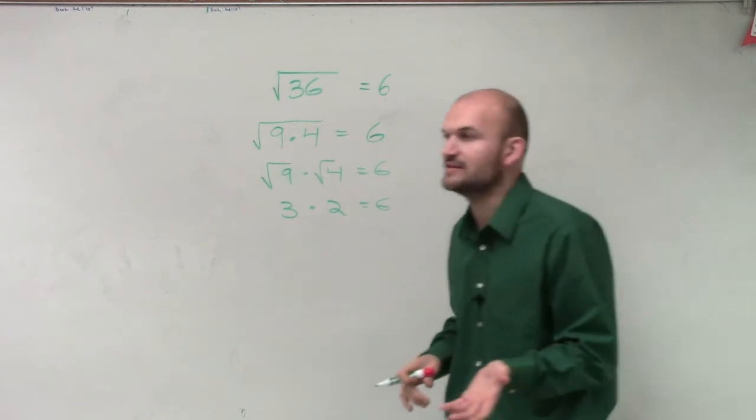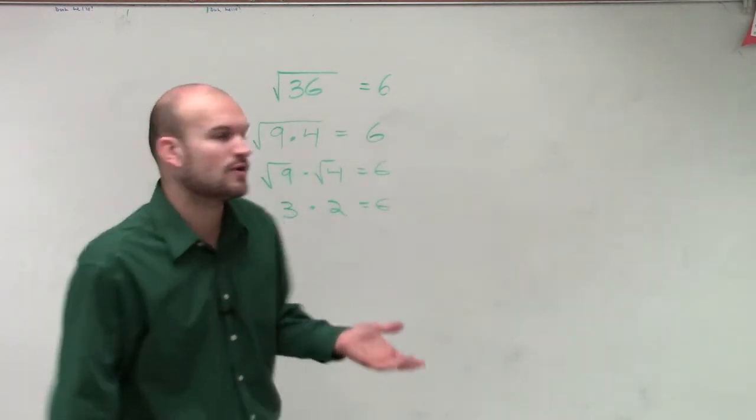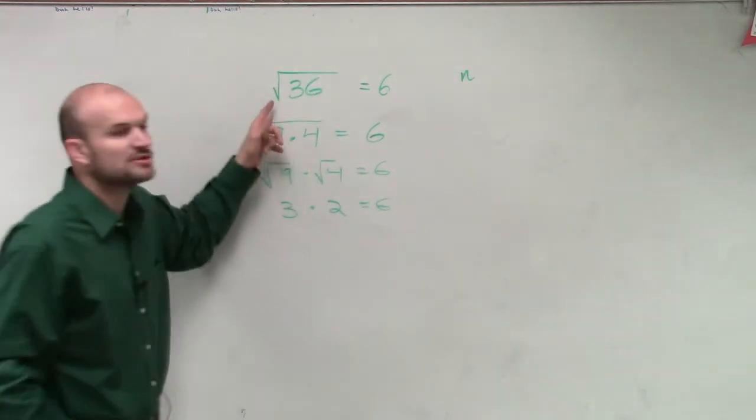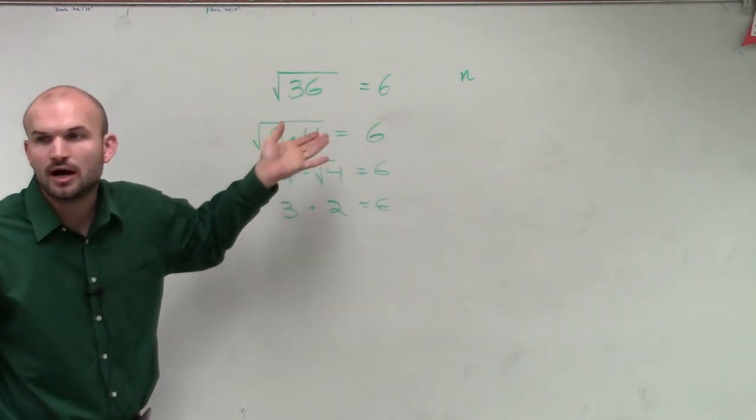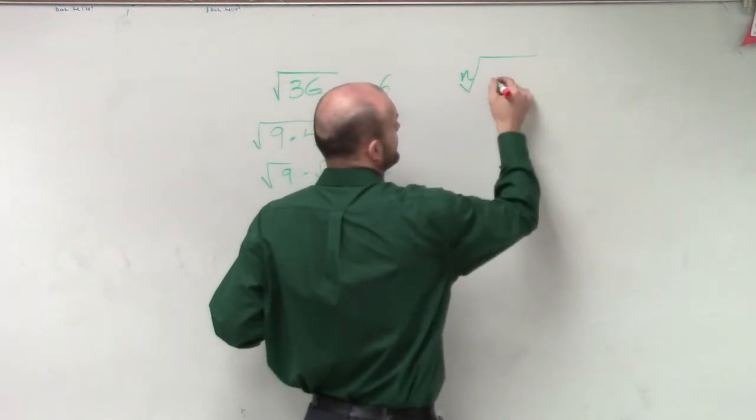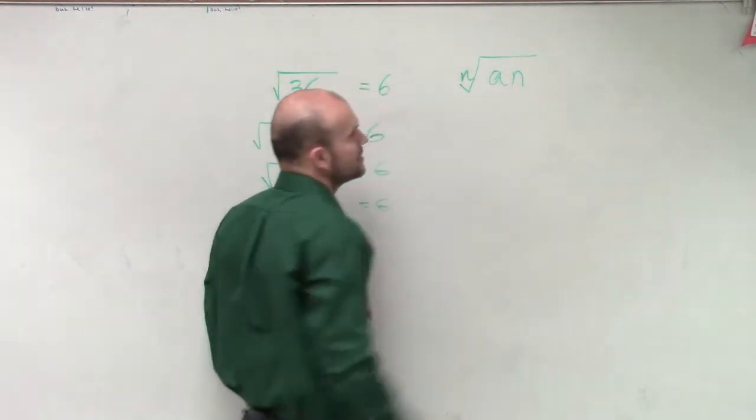So then what this does is this gives us the product rule of radicals. And here's what the product rule of radicals states. It doesn't matter if I'm using a square root, a cube root, an nth root. It doesn't matter what root I use.